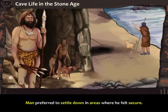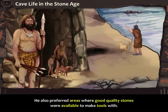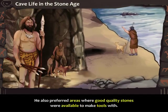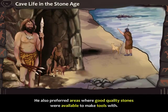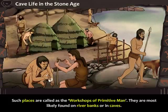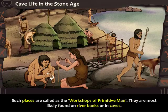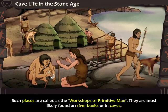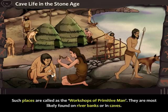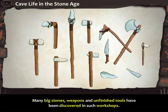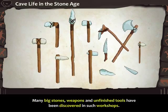Man preferred to settle down in areas where he felt secure and where good quality stones were available to make tools with. Such places are called the workshops of primitive men. They are most likely found on river banks or in caves. Many big stones, weapons and unfinished tools have been discovered in such workshops.